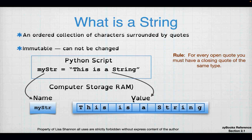A string is identified in Python by matching quotes. You need an open double quote and a closed double quote — Python will recognize that as a string.